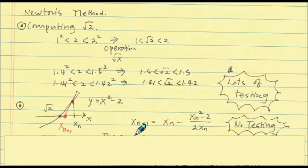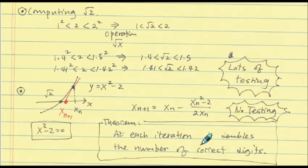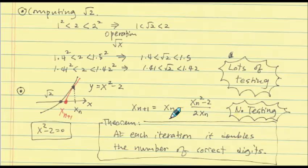Another remarkable comment about Newton's method: at each iteration, it doubles the number of correct digits. Suppose at one stage we have 10 correct decimal digits. After one more iteration, it guarantees 20 correct digits. Do it again — 40 correct digits, and so on. If you do this experiment with computer software, it's kind of amazing to see how fast the correct digits double. It's just an amazing phenomenon.